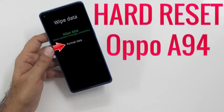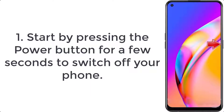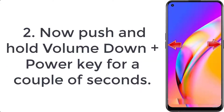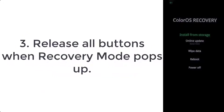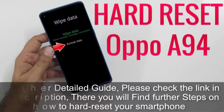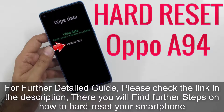How to hard reset Oppo A94. Step 1: Start by pressing the power button for a few seconds to switch off your phone. Step 2: Now push and hold volume down plus power key for a couple of seconds. Step 3: Release all buttons when recovery mode pops up.